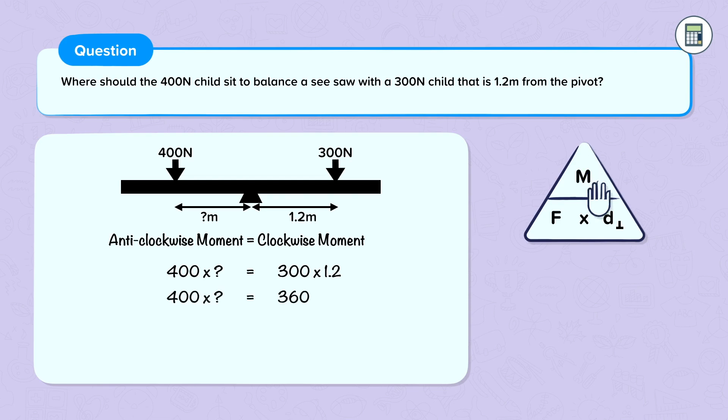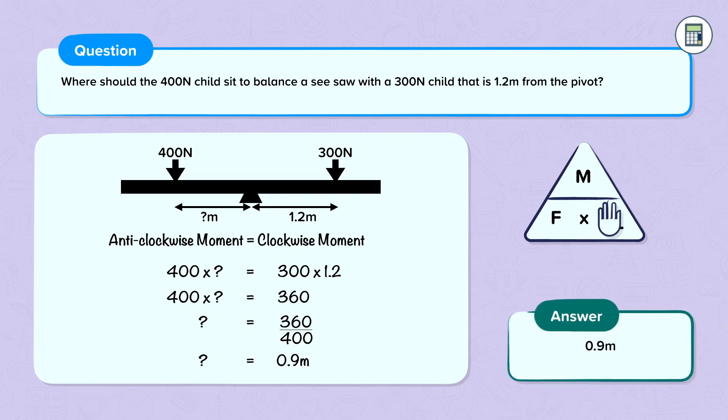To get the mystery distance by itself, we need to divide by 400. So 360 divided by 400 is our distance of 0.9 meters. So they should sit 0.9 meters away from the pivot.